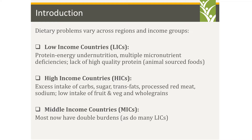These dietary problems vary across regions and income groups. In low-income countries, protein-energy undernutrition is present, along with multiple micronutrient deficiencies and lack of high-quality protein, particularly animal-sourced foods. In high-income countries, there's excess intake of carbs, sugars, trans fats, and processed red meat, and still low intake of fruits, vegetables, and whole grains. Middle-income countries increasingly have both problems, with over-nutrition and under-nutrition occurring simultaneously.